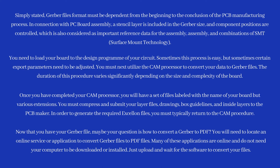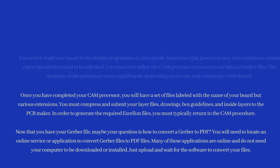Once you have completed your CAM processor, you will have a set of files labeled with the name of your board but with various extensions. You must compress and submit your layer files, drawings, board guidelines, and inner layers to the PCB maker. In order to generate the required Excellon files, you must typically return to the CAM procedure. Now that you have your Gerber file, you may also want to convert it to PDF using an online service or application. Many of these applications are online and do not need to be downloaded or installed — just upload and wait for the software to convert your files.